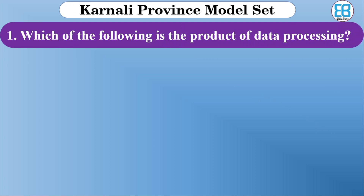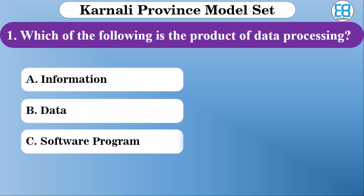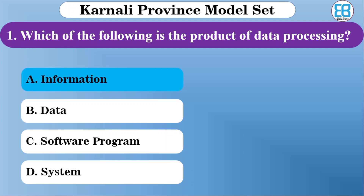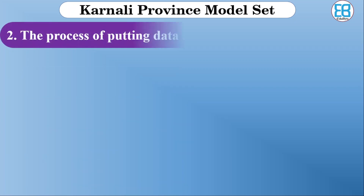The first question from the list: which of the following is a product of data processing? The options are information, data, software, program, and system. The correct option is information. The process of putting data into a storage location is called storage.